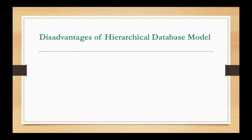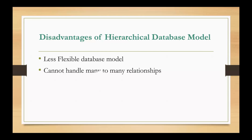Everything has a disadvantage. The first disadvantage is a less flexible database. One-to-many relationships can be managed, but we cannot handle many-to-many relationships. The main drawback is that if you have a many-to-many relationship, it becomes very difficult to solve. This is the biggest drawback of the hierarchical database model.